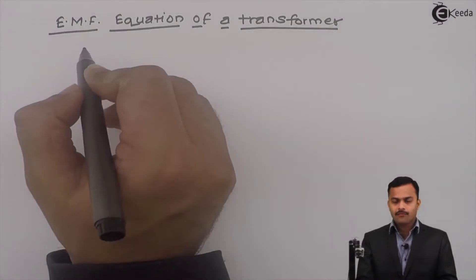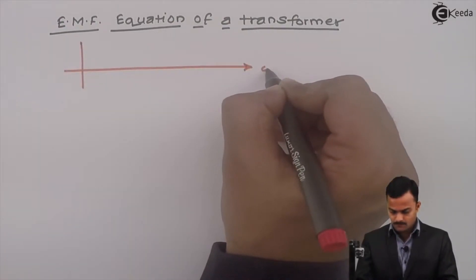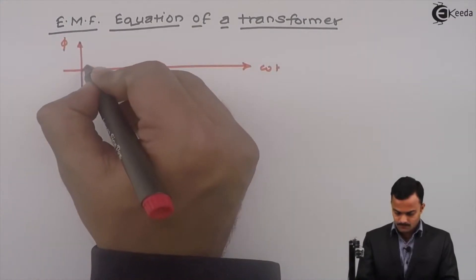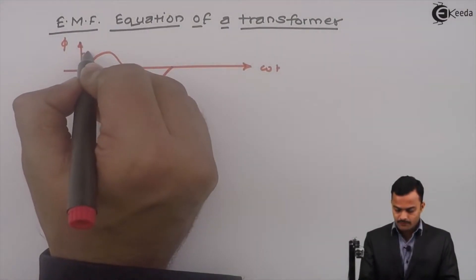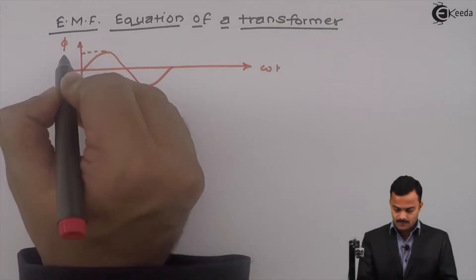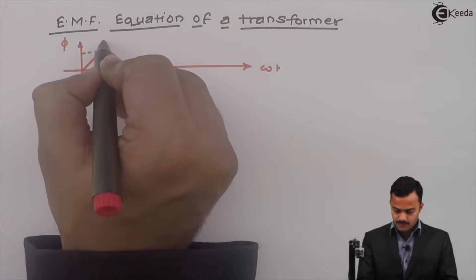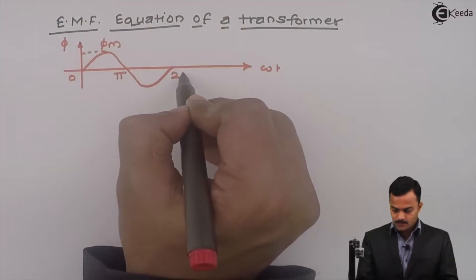I am having a flux waveform like this. A sinusoidally varying flux waveform I will get because I am applying an AC voltage. This is the maximum value of flux phi m, zero, pi, two pi.